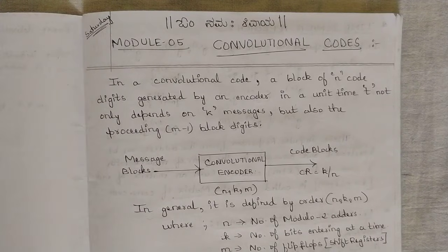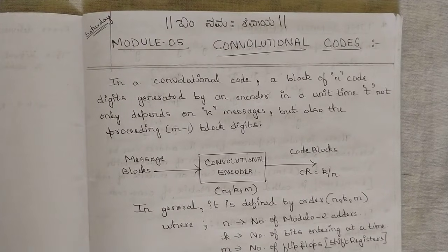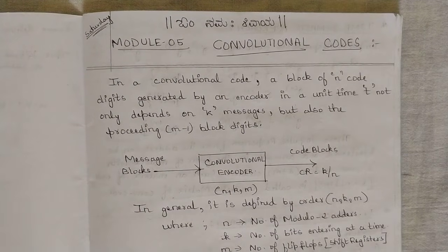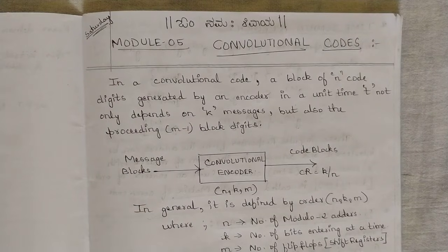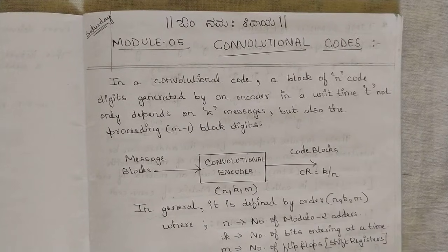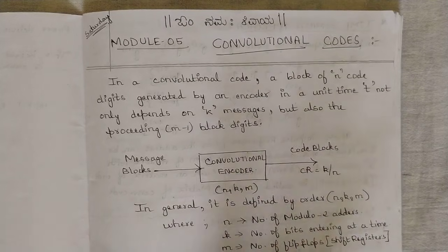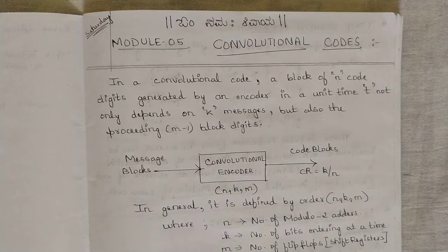Hello everyone, welcome to this new video. In my previous video I concluded with Module 4, discussing the concept of encoding using shift registers and building the encoding circuit with respect to all the data provided. That was a very important video. Now I am going to be starting with Module 5 - it is a very small module, around 4 to 5 videos, covering the whole module. There are not many concepts here, but whichever concepts are there, all of them are very important.